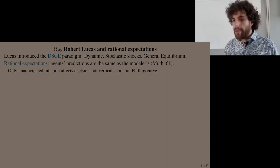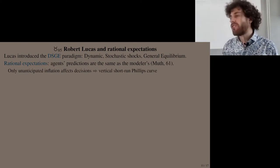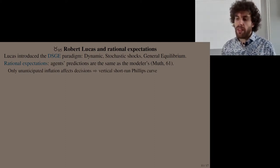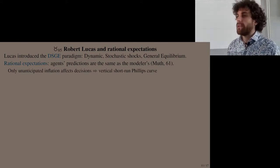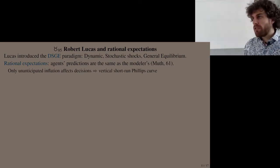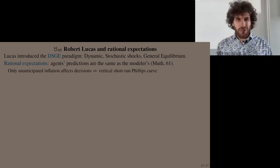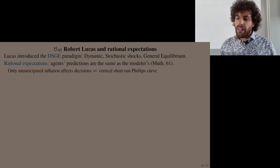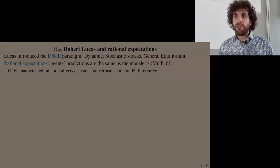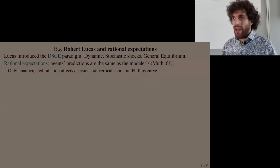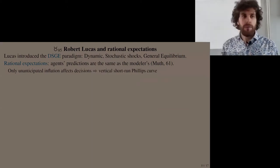The big assumption Lucas introduced is rational expectations, which was first proposed by John Muth. Rational expectations is the idea that agents' predictions are the same as the best modeler's — the best economist's.